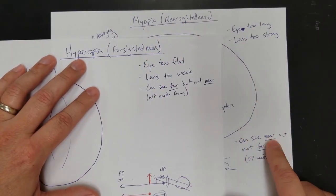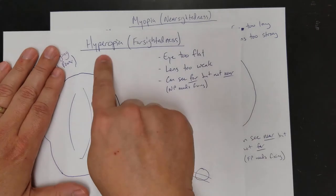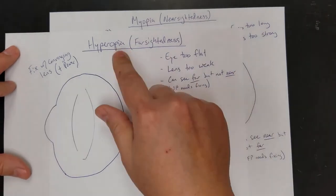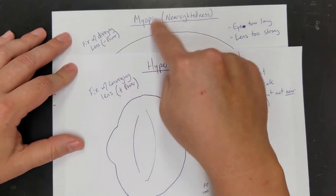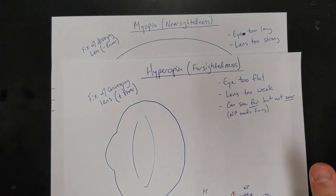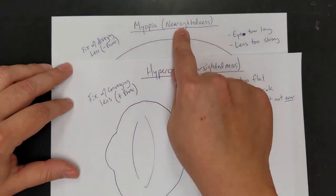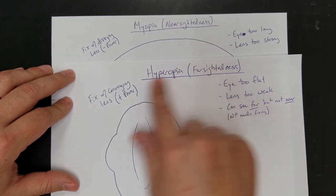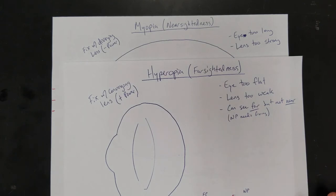To recap: myopia or nearsightedness means your eye is too long or lens too strong — you can see near but not far, so we fix it with a diverging lens that has negative power. Hyperopia means your eye is too flat or lens too weak — you can see far but not near, so we fix it with a converging lens with positive power. You can now tell by looking at someone's glasses: a diverging lens makes the face look smaller (nearsighted), while a converging lens makes the face look larger (farsighted). Impress — or weird out — your friends by guessing correctly!